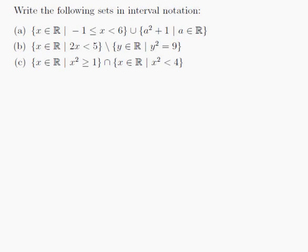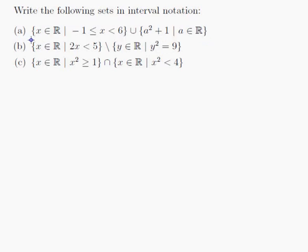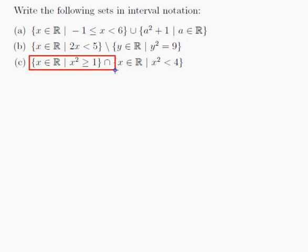Write the following sets in interval notation. A: the set of x in R such that minus 1 is less than or equal to x which is less than or equal to 6, union the set of a squared plus 1 such that a is in R. B: the set of x in R such that 2x is less than 5, without the set of y in R such that y squared is equal to 9. C: the set of x in R such that x squared is greater than or equal to 1, intersection the set of x in R such that x squared is less than 4.